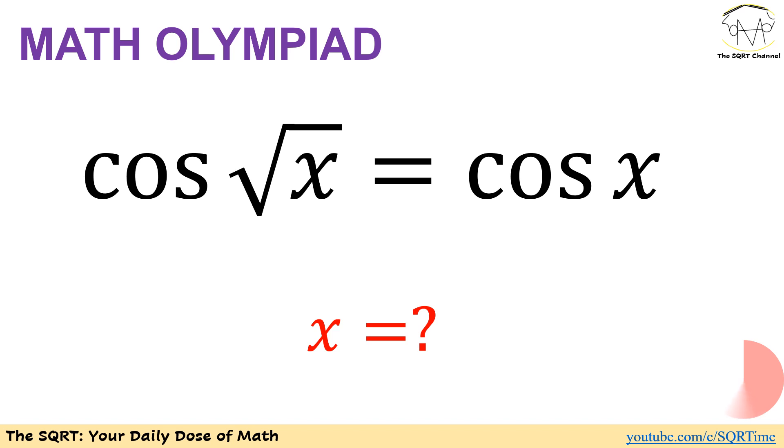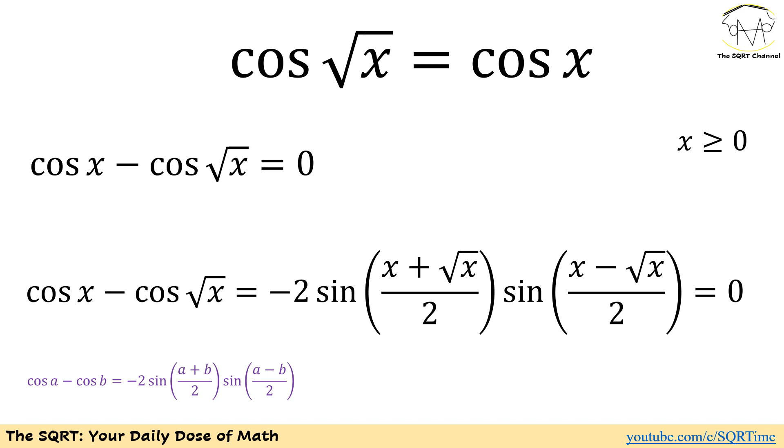Thank you. To solve this problem, let's start with moving everything on one side. Then I will have cosine of x minus cosine of square root of x equals to 0. Since we have radical x, then x needs to be positive or 0.